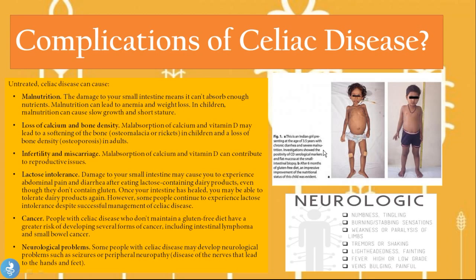A case example: a young girl presented at age three and a half with chronic diarrhea and severe malnutrition. Investigations showed she was positive for celiac disease serological markers and biopsy showed flattened mucosa in the small intestine. After six months of a gluten-free diet, an impressive improvement of her nutritional status was evident, showing that if patients follow a gluten-free diet their prognosis is very, very good and they are able to lead happy and healthy lives.